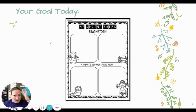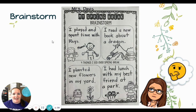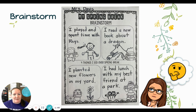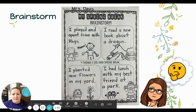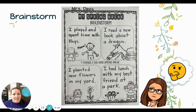Mrs. Davis did a little brainstorming — what I did with my spring break. I came up with four things that could be topics for stories. The first topic: I played and spent time with Reese — there he is, he's so cute! I could write a story about one of the games we played. My next topic: I read a new book about a dragon. Down here, I planted some new flowers in my yard and did some yard work in the nice weather. And last, I had lunch with my best friend who I haven't seen in a while at a park. They're nothing crazy, nothing out of the ordinary — just four topics for stories about my spring break.